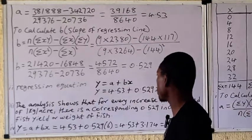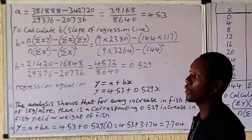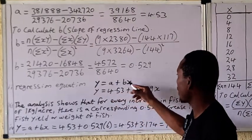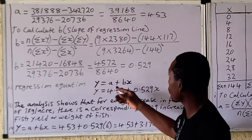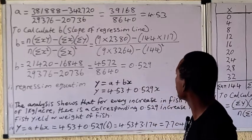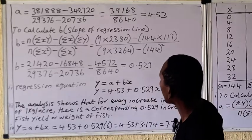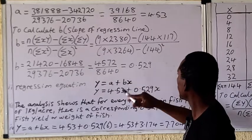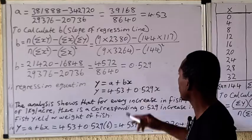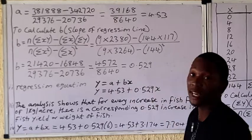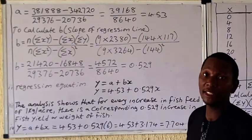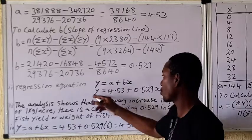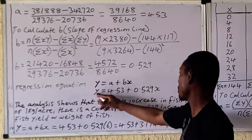Once you get that, go to the normal regression equation, which is similar to the equation of a line in mathematics: y equals a plus bx. We calculated a and b, so the value for a is 4.53 and the value for b is what we just calculated. Remember x is the independent variable — when x changes, y changes, because y is dependent on x.